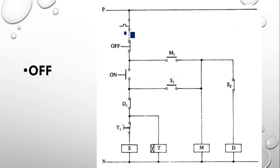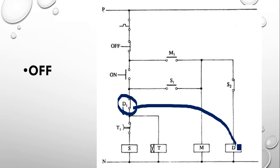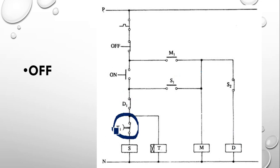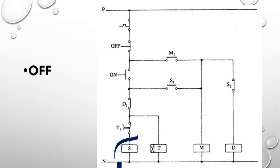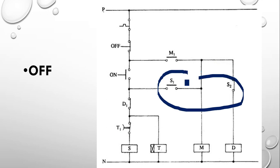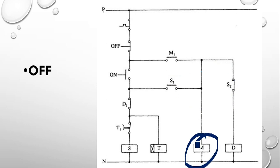Now the control circuit: components include a normally closed trip contact from the thermal overload relay, a normally closed off button, a normally open on button, D1 the normally closed auxiliary contact of the delta contactor, T1 the normally closed timer contact (new addition compared to semi-automatic), a timer coil, an NO auxiliary contact of the timer, the star contactor coil S with contacts S1 (normally open) and S2 (normally closed), the main contactor coil M, and M1 its normally open auxiliary contact.